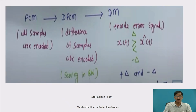In PCM, all samples are encoded, which increases the number of bits. In DPCM, the difference of the samples is encoded, saving some bandwidth. In delta modulation, the error signal is encoded depending on the difference from the differential amplifier — X(T) minus X-cap(T). If X(T) is greater than X-cap(T), delta will be positive. If X(T) is less than X-cap(T), delta will be negative.